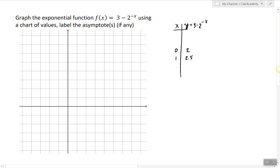So to see the pattern let's try another value. At 2, 2 to the power of negative 2 is 1 fourth, 3 minus 1 fourth is 2.75.